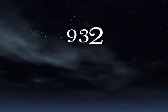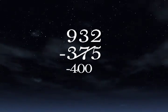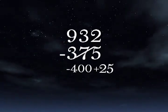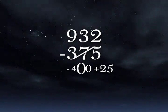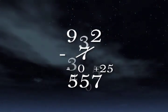Another way to avoid borrowing is to over-subtract and then add back the difference. For example, 932 minus 375. Try subtracting 400 and then adding back 25. 932 minus 400 is 532, plus 25 is 557.